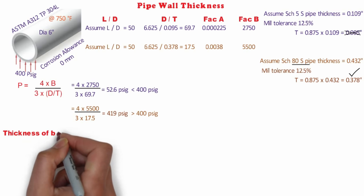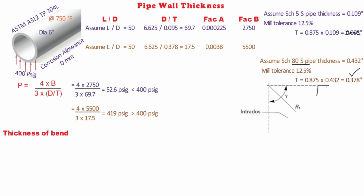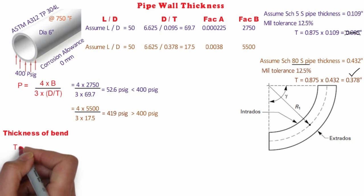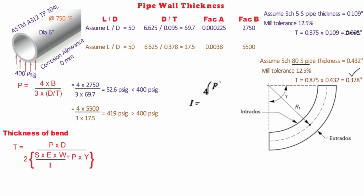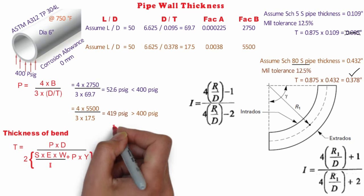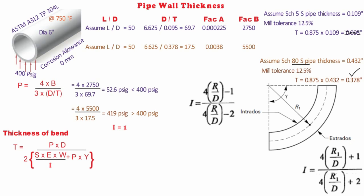Let's move on to thickness of bend. I'm not going to explain this in detail. Briefly, the minimum thickness of bend is PD / (2SE/i + PY). At intrados, i = (4R₁/D - 1) / (4R₁/D - 2), whereas at extrados, i = (4R₁/D + 1) / (4R₁/D + 2). In general, i = 1 and the thickness applies at mid-span.